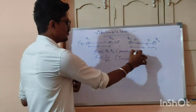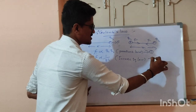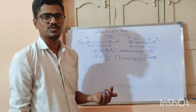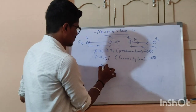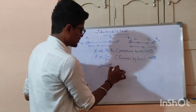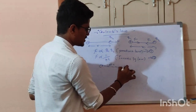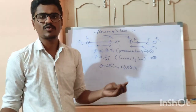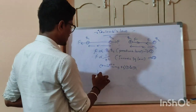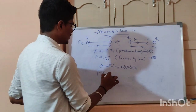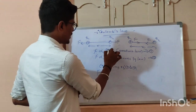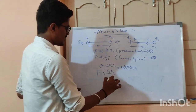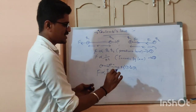Now, considering equation one and equation two and combining them, force is proportional to Q1 times Q2 divided by r squared.